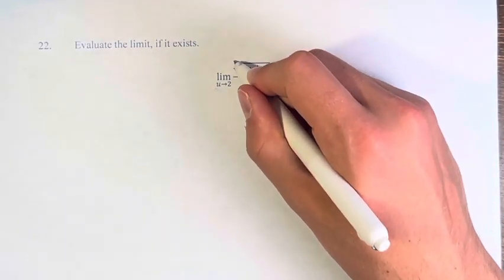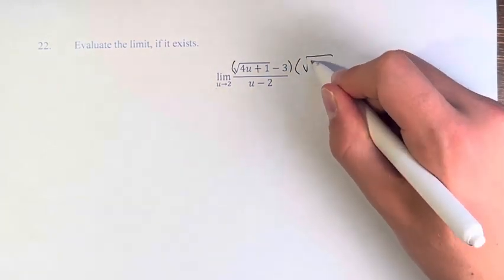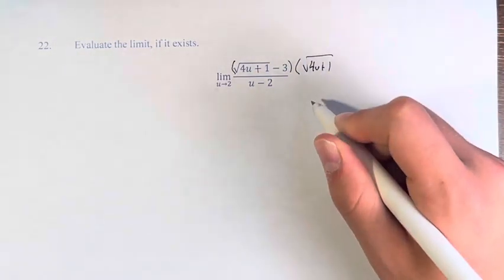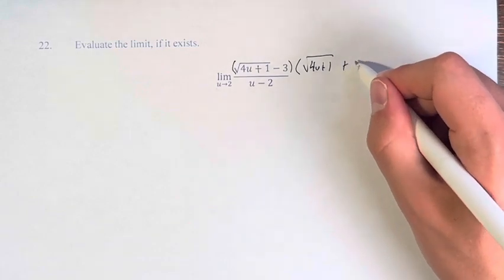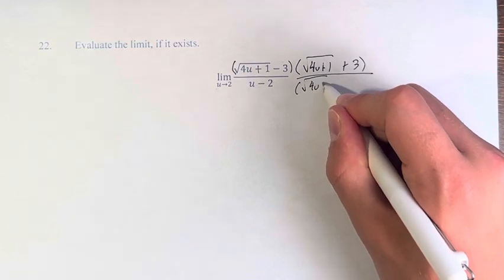What does that mean? Well, if we have the square root of 4u plus 1 minus 3, we multiply it by the square root of 4u plus 1 plus 3. And then of course we have to multiply the denominator by it as well.